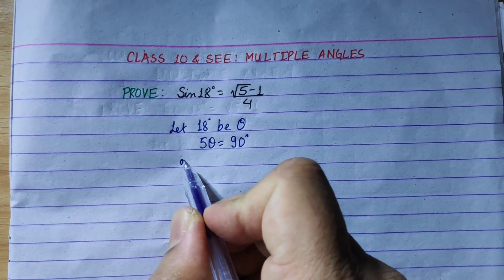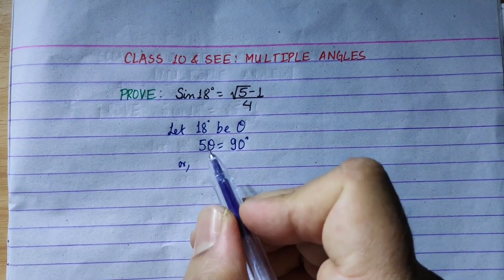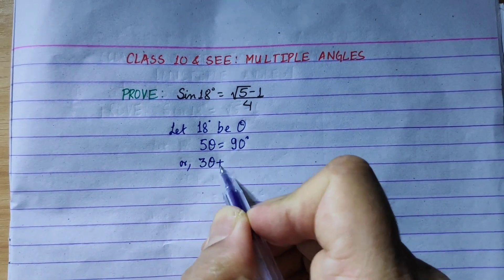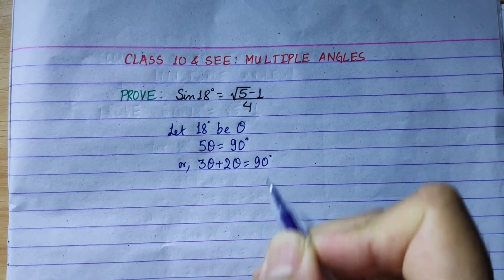If we have 5 theta, we will break it into 3 theta and 2 theta. So 5 theta is equal to 3 theta plus 2 theta is equal to 90 degrees.